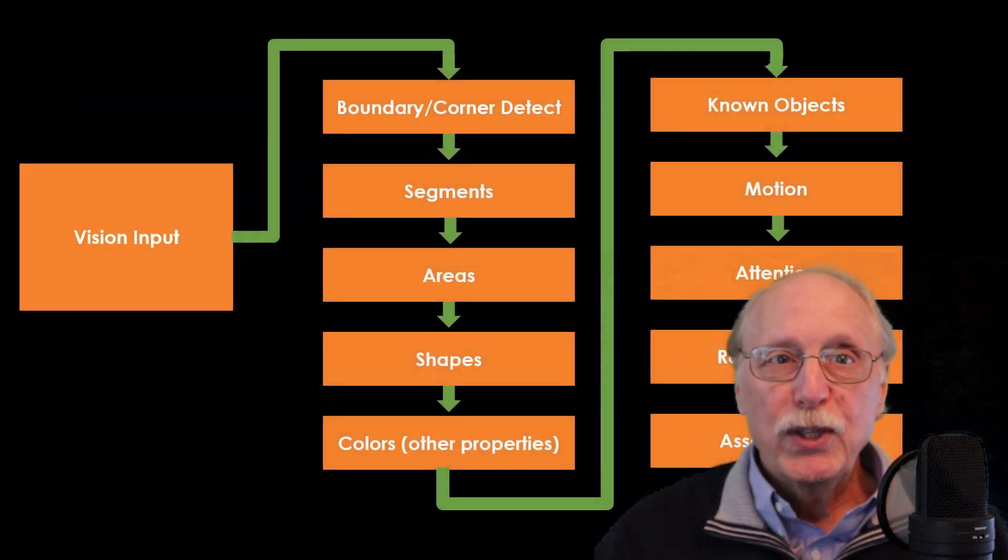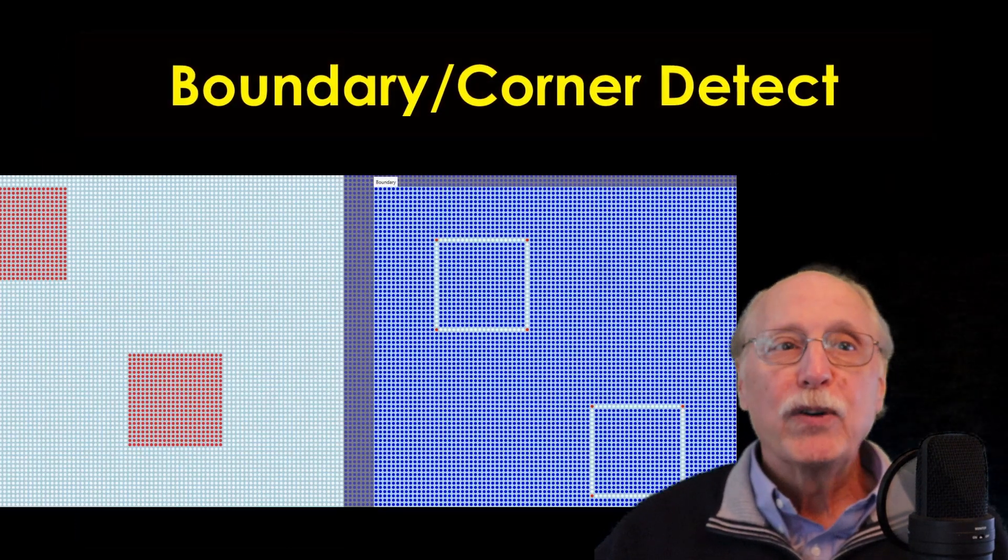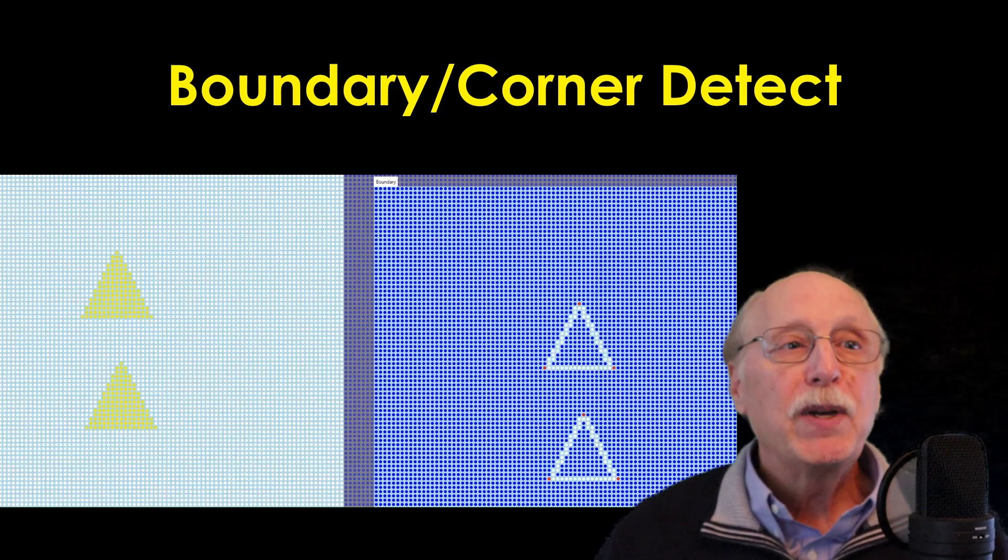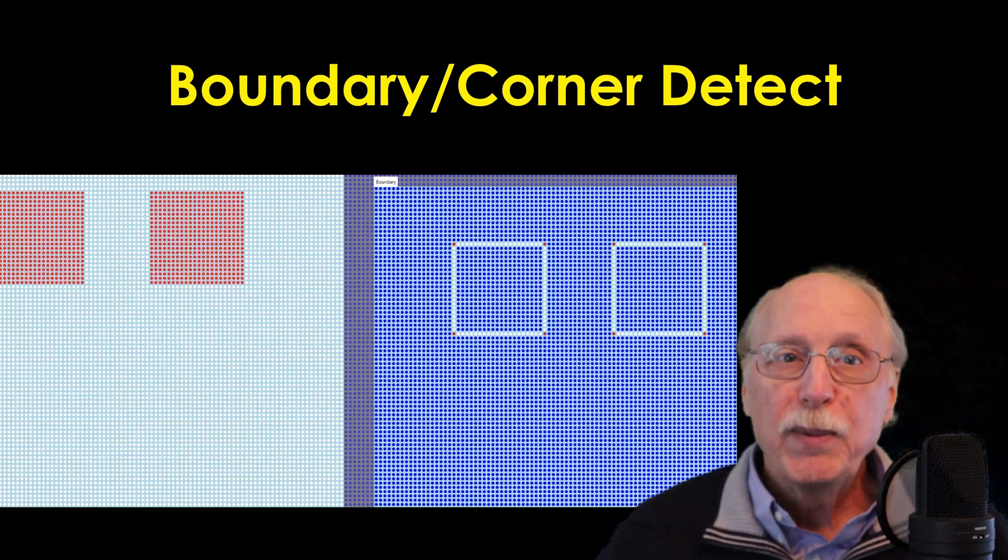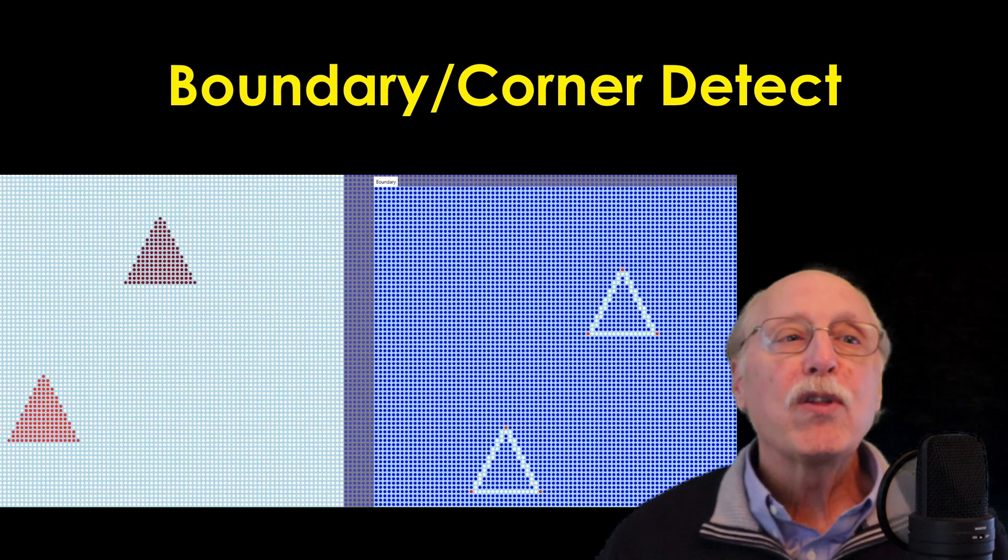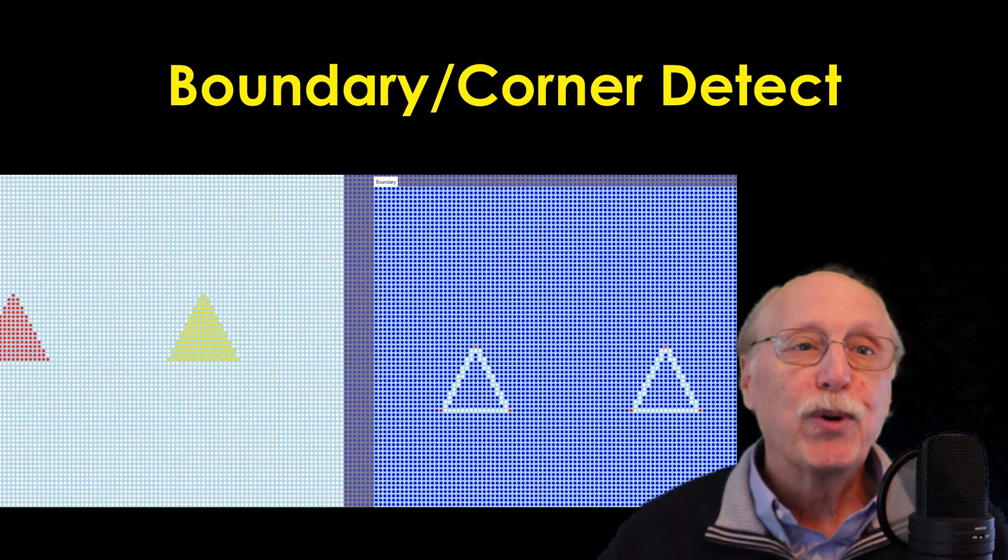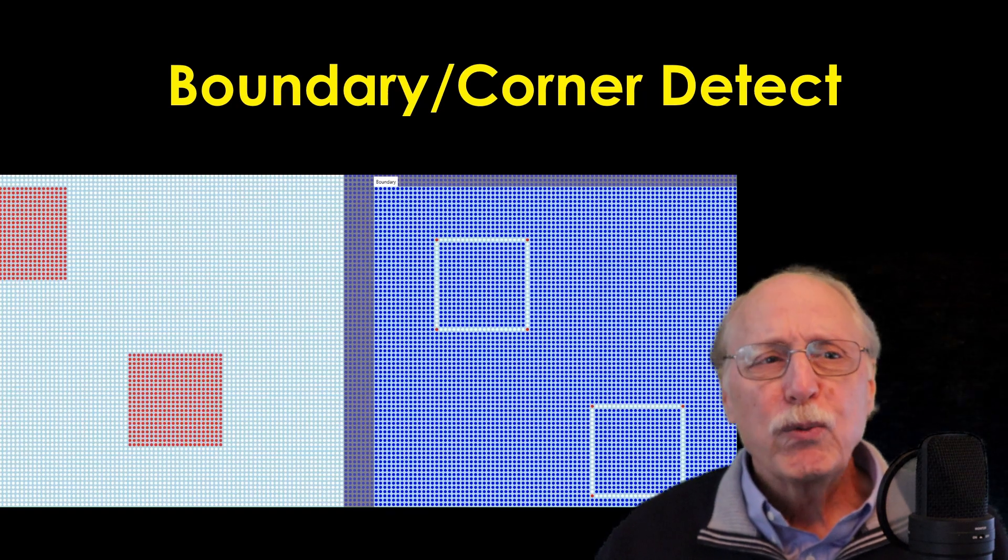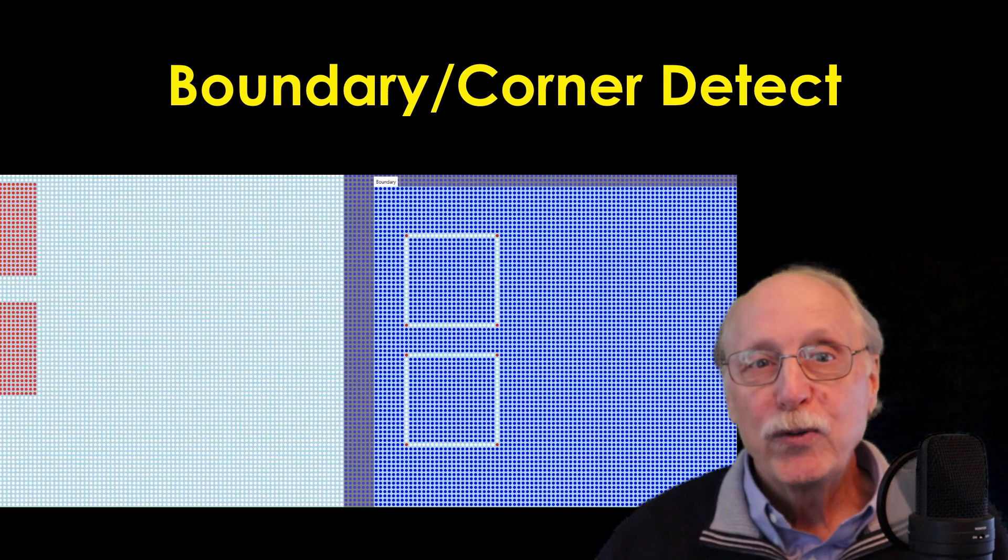Boundaries and corners: This step finds boundaries which are points in the image where the adjacent color pixels are abruptly different. It also finds points of interest where the boundaries themselves change abruptly. These are usually corners and are shown as red neurons.